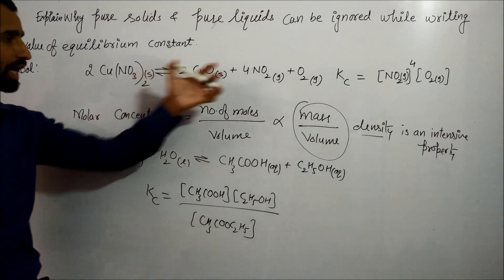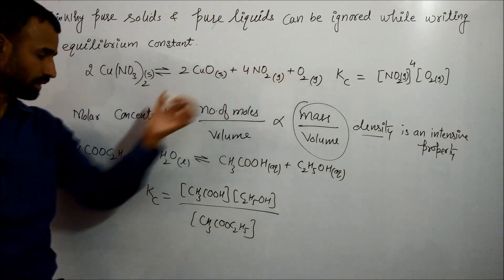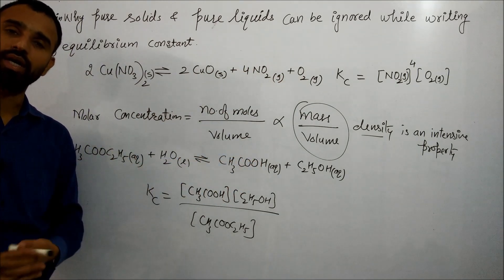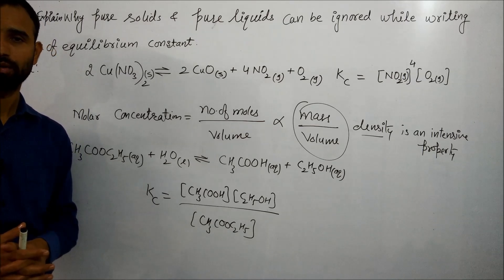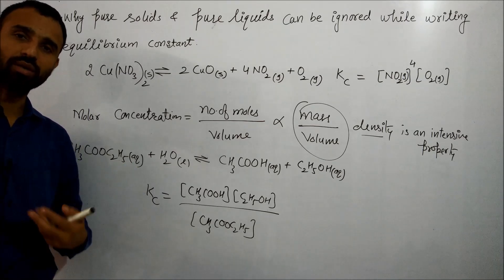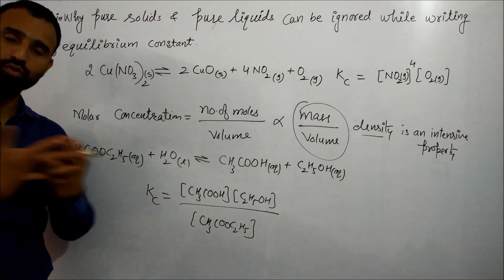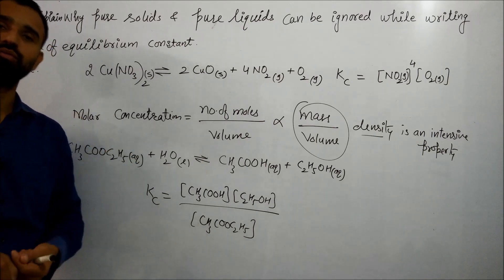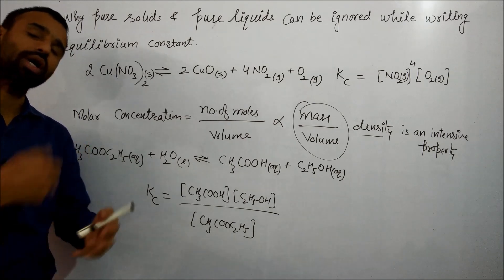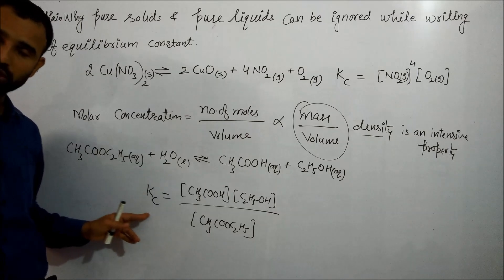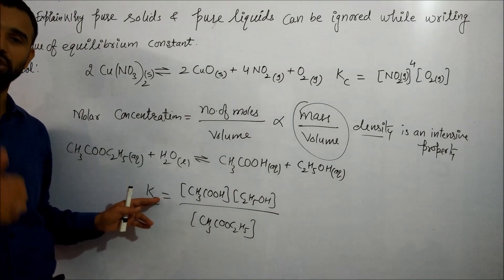Because in case of gaseous species or aqueous species, mass varies in a given volume. If mass varies, obviously their moles vary. And if moles vary, moles per volume increases or decreases, and that's why they should appear when writing expression for the value of Kc.